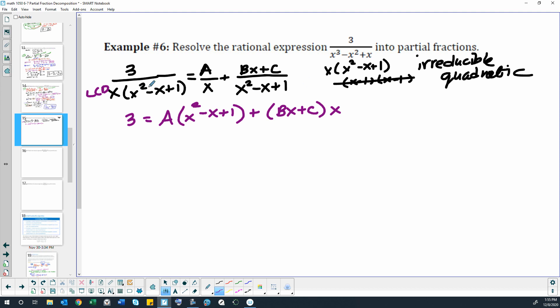So assuming we multiply everything by that, the x cancels here, the x squared minus x plus 1 cancels here, and then we distribute. Well, if that's the method we're going to use.